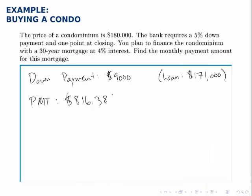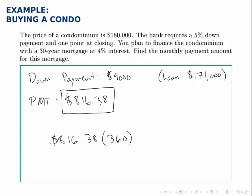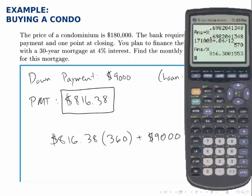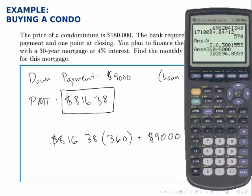Now let's ask one more question: once we know the payment amount, how much are we actually paying in interest on this loan? If I'm paying $816.38 and doing this for 30 years, 12 times a year, that means I make 360 payments. So 360 payments of $816.38 plus the $9,000 down payment tells me the total I actually pay for this condo. Multiplying $816.38 by 360 and adding $9,000 gives a total of about $302,896.